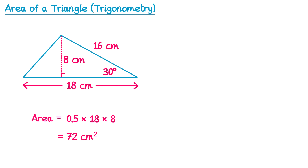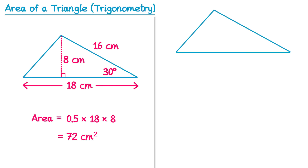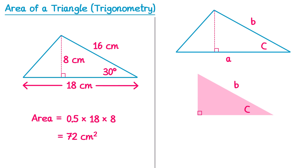We can use this technique to find the area of any triangle if we're given that information. For a general triangle we label the sides as a, b, and c, and the angles opposite those as capital A, capital B, and capital C — the same way as for the sine and cosine rule. Comparing this to the previous example, we had sides a and b and angle C. Drawing in the perpendicular height, we find the height by taking the hypotenuse b multiplied by sine of angle C, which we write as b sine C.